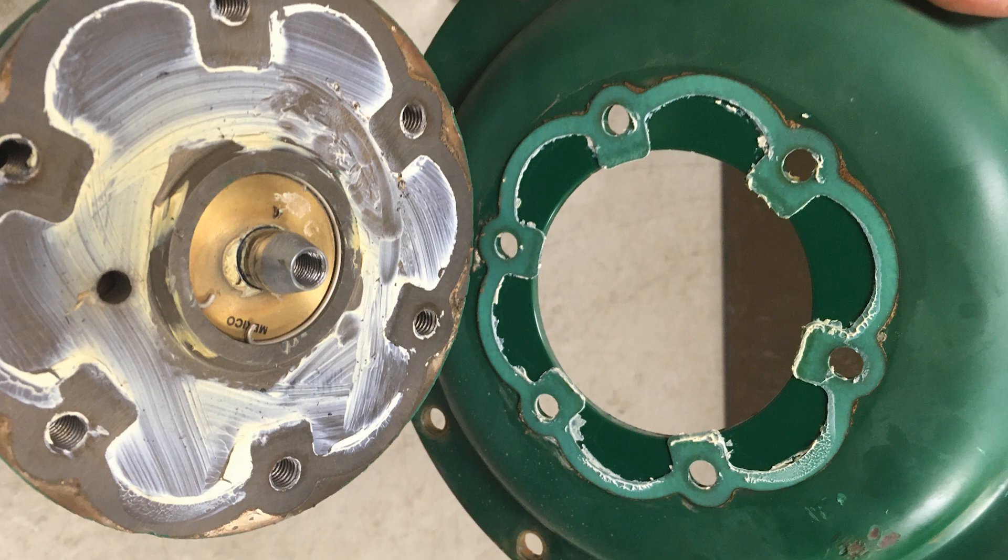Where the lower half of the actuator case is bolted to the stem, there is a seal. This seal can become brittle and will be easily broken when separating the lower diaphragm chamber from the stem.